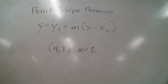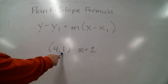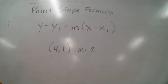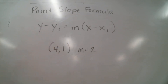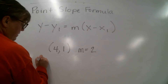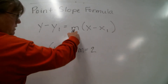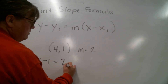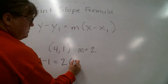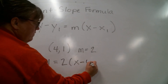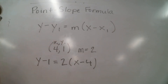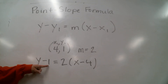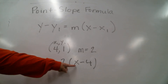Here's an example. If you have a line that passes through point (4, 1) and it has a slope of 2, you can write an equation for it by following the point-slope formula. So Y minus Y1 — we're going to use 1 as Y1. So Y minus 1 equals M, and they've already told us the slope is 2, times X minus X1, so X minus 4. We used 1 as Y1 and 4 as X1. Y minus Y1 equals the slope M times X minus X1.